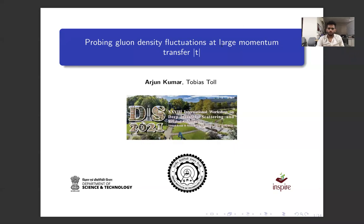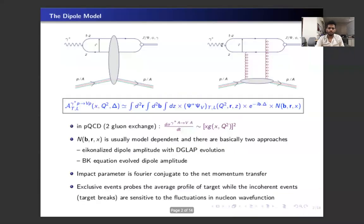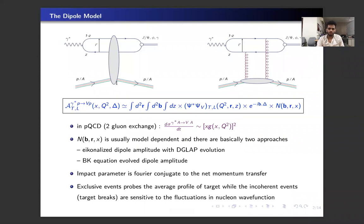Hello everyone, I will talk about gluon density fluctuations at large momentum transfer. The processes that are sensitive to spatial information in the transfer plane are the diffractive processes where we can measure the net momentum transfer to know the spatial information.